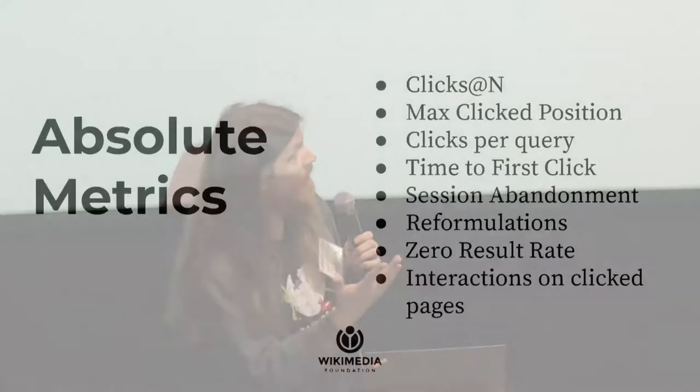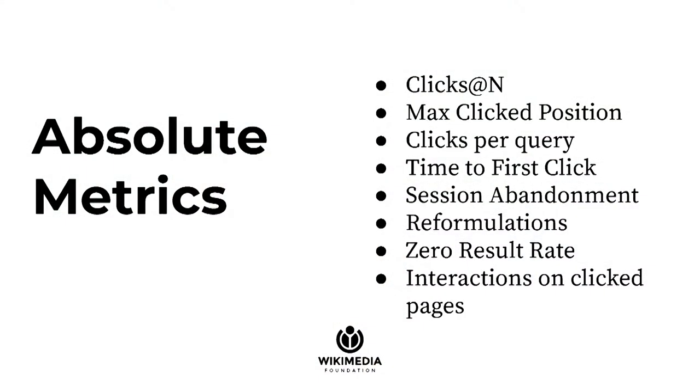When we run an online test, these are some of the metrics we'll look at. We'll often look at click position, maximum click position — because users often click the first one, then come back and click further down the page. We'll look at how long it takes them, session abandonment, how many times they reformulate their query — all kinds of little metrics that can be useful to suss out what the user's preference was.